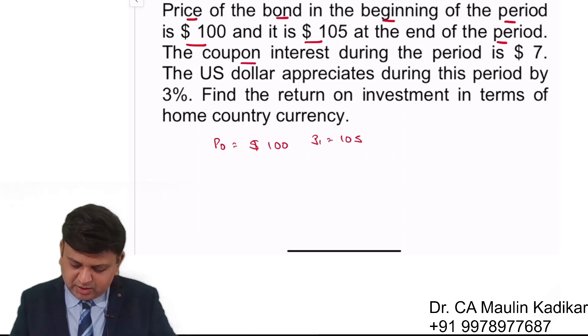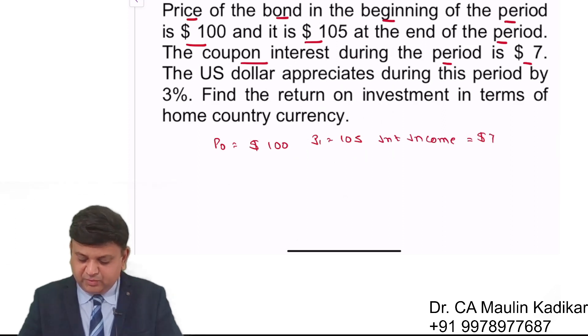The coupon interest during the period is $7. The US dollar appreciates during the period by 3%. So dollar currency is appreciated by 3%.